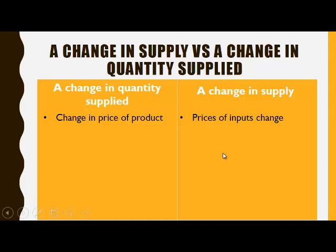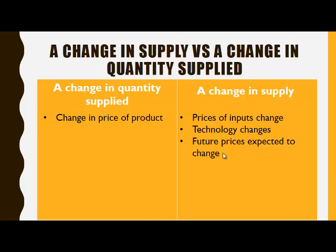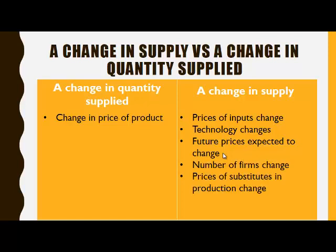For example, the prices of inputs can change, technology can change, future prices can be expected to change, the number of firms can change, the prices of substitutes in production can change, and the prices of complements in production can change.